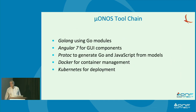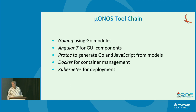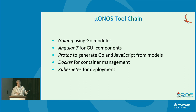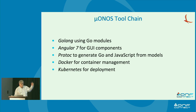For micro-ONOS we've changed the toolchain. Classic ONOS is very much Java; we're moving to Golang for micro-ONOS. It's a very robust system language that fits very well with gRPC, which is why we chose it. We're using Angular 7 for GUI components. Proto-Talk is a way to generate client and server-side stubs in any language from a model. We're using Docker for container management and Kubernetes for deployment, doing everything through containers rather than installing as a Linux service.